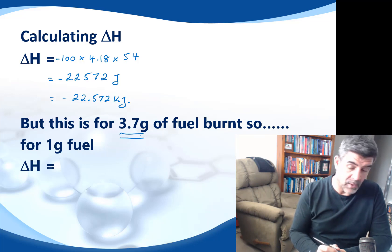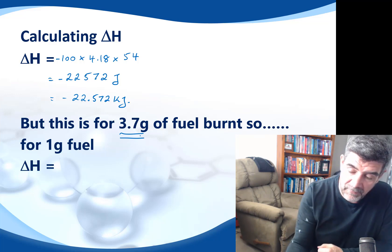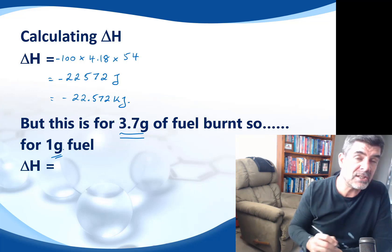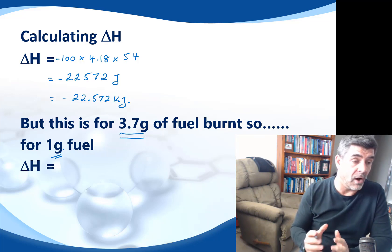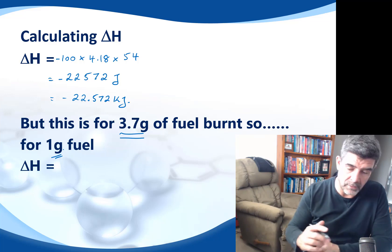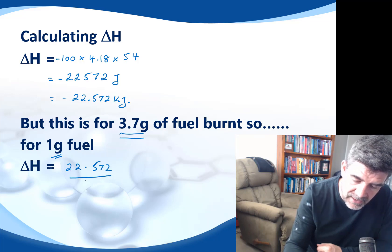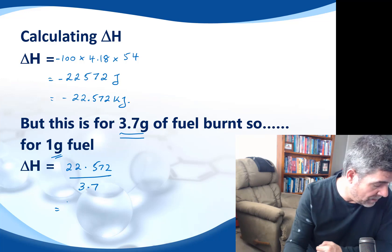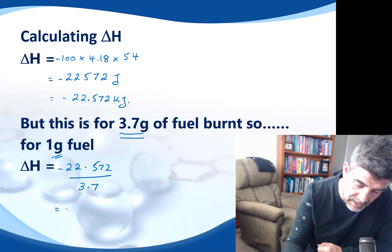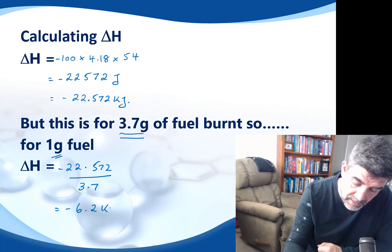Now, we know when that happened that we used 3.7 grams of fuel. So what we need to be aware of is that if we standardize this, we can actually get the value of the energy generated per gram of fuel. So the simple way to do that is to take 22.572 and divide that by 3.7. And when we do that, we get a value of, of course, it's still negative, so minus 6.2 kilojoules per gram.